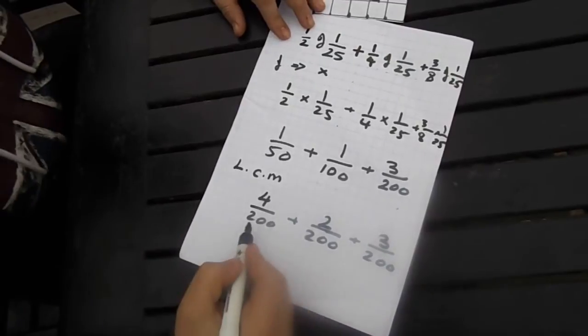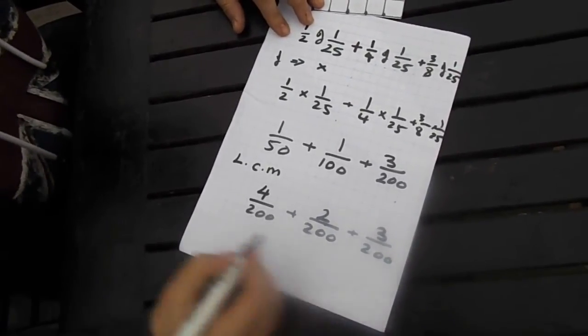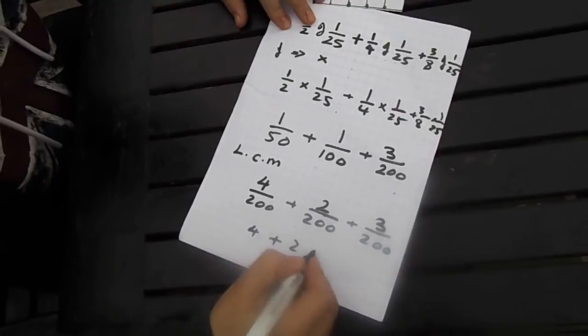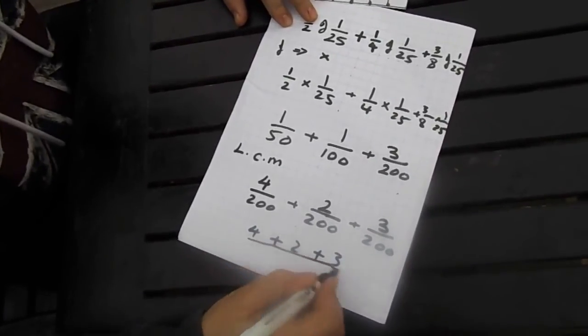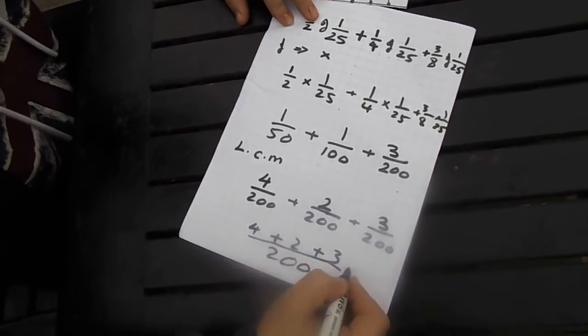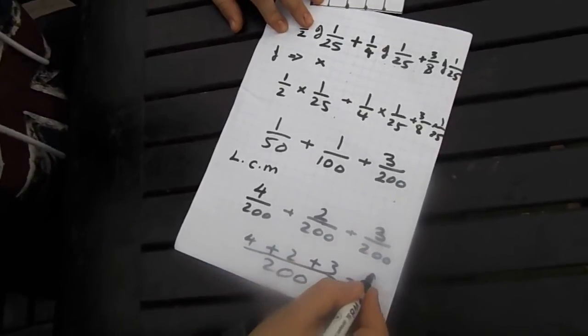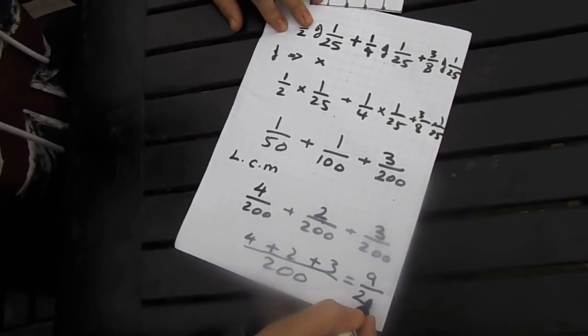So now I've got all denominators are the same. So I've got 4 plus 2 plus 3 all over 200, which is equal to 9 over 200.